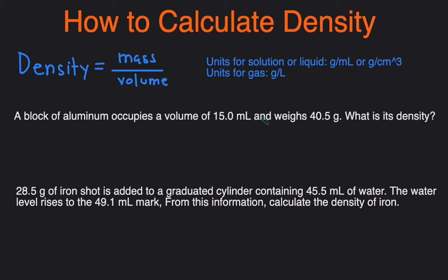Now let's take a look at two examples to see how we can calculate density using this equation. We have a block of aluminum that occupies a volume of 15.0 milliliters and weighs 40.5 grams. What is its density?